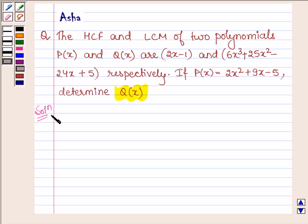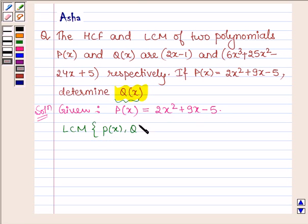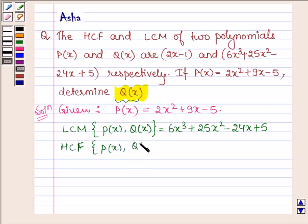Let's start with the solution. We are given polynomial P(x) which equals 2x² + 9x - 5. We have to find the other polynomial Q(x) such that LCM of P(x) and Q(x) is 6x³ + 25x² - 24x + 5 and HCF of P(x) and Q(x) is 2x - 1.